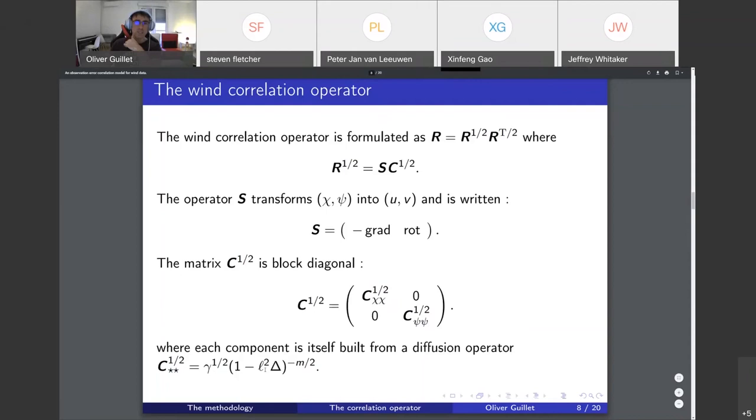You will have a normalization factor gamma and then the standard diffusion equation with one minus lambda square times the Laplacian here, and you want to discretize that over the grid defined by your observation set.